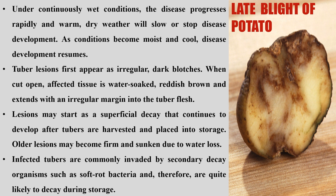Lesions may start as superficial decay that continues to develop after tubers are harvested and placed into storage. Old lesions may become firm and sunken due to water loss, and tubers will appear shrunken. Infected tubers are commonly invaded by secondary decay organisms such as soft rot bacteria, and are therefore quite likely to decay during storage.